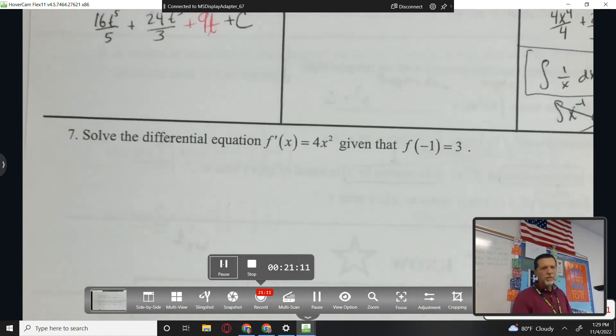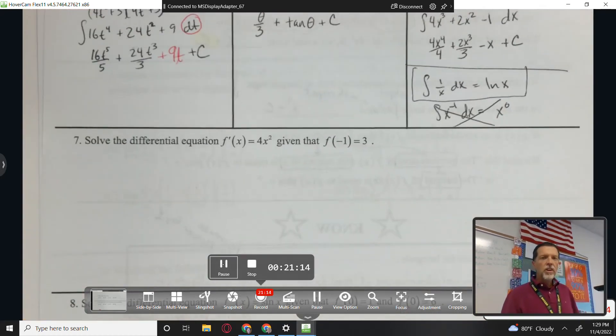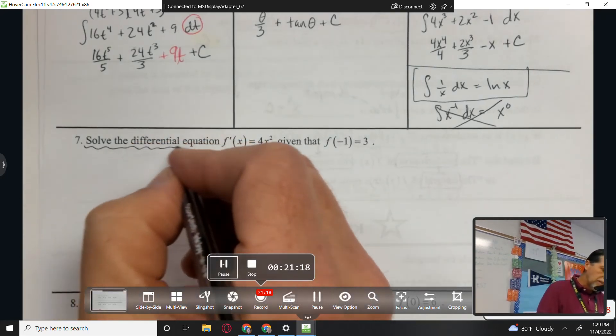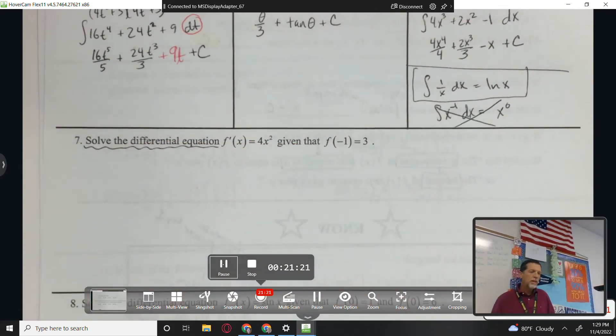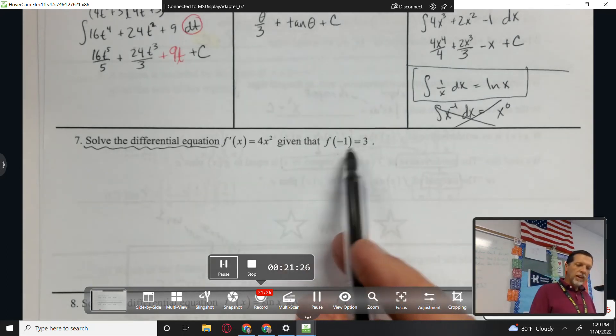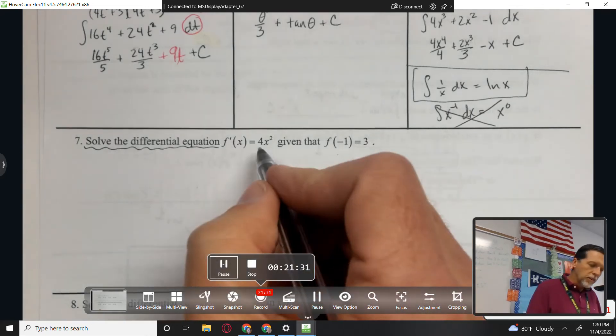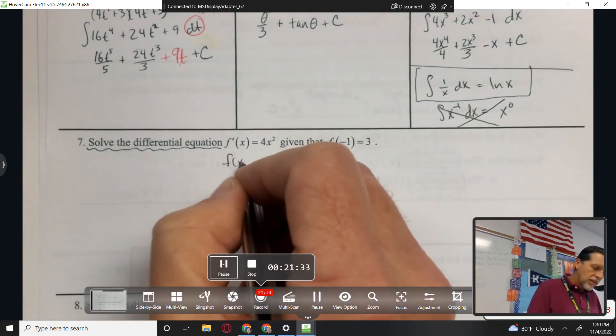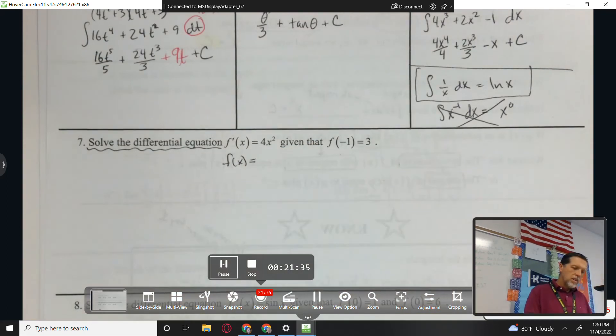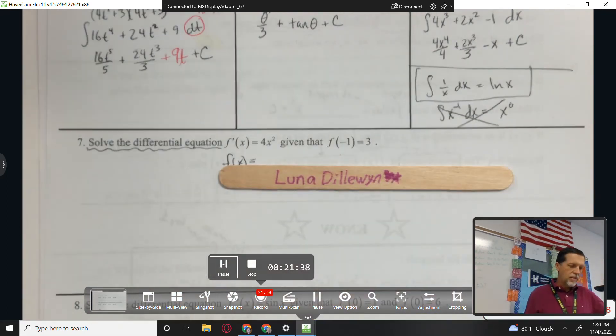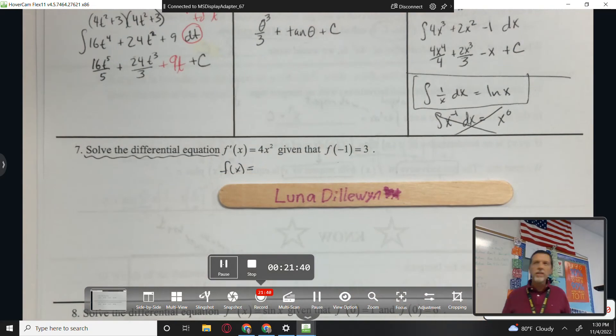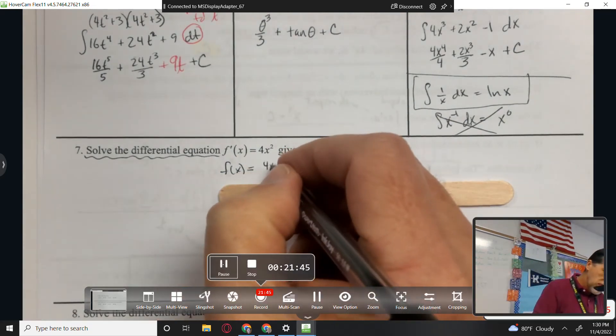All right, number 7. Solve the differential equation. Okay, well we haven't even used that language before. If f prime is 4x squared, given that f of negative 1 equals 3. Okay, well I can definitely go backwards to get f. Luna, what's the anti-derivative of 4x squared? 4x to the third divided by 3.